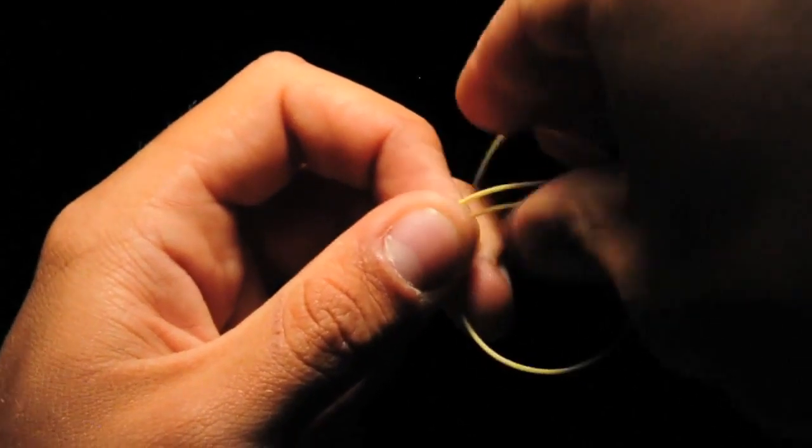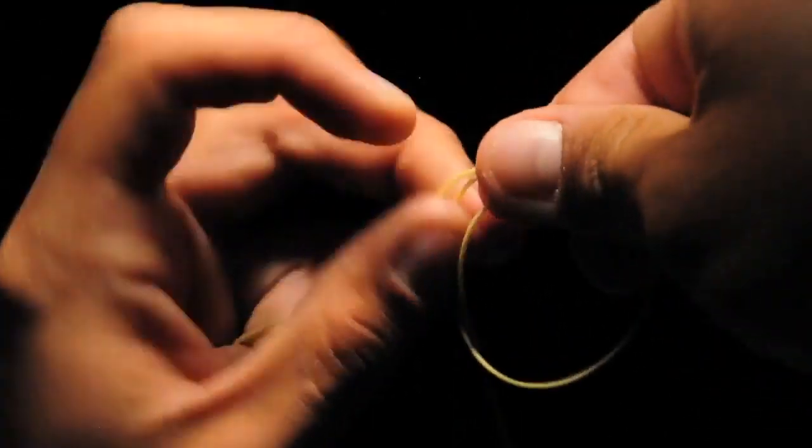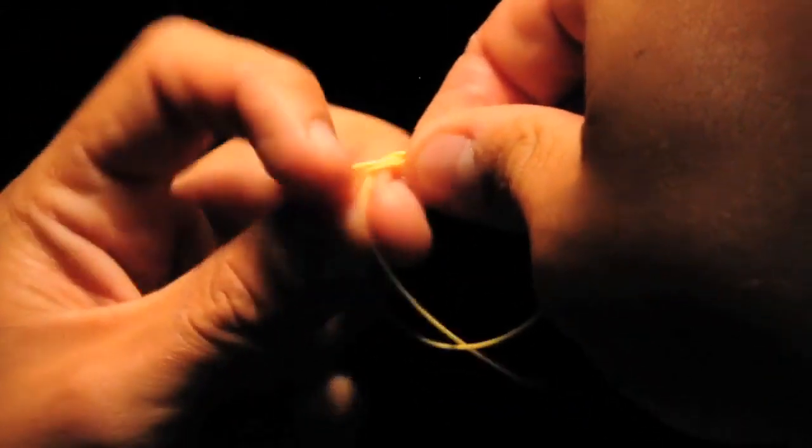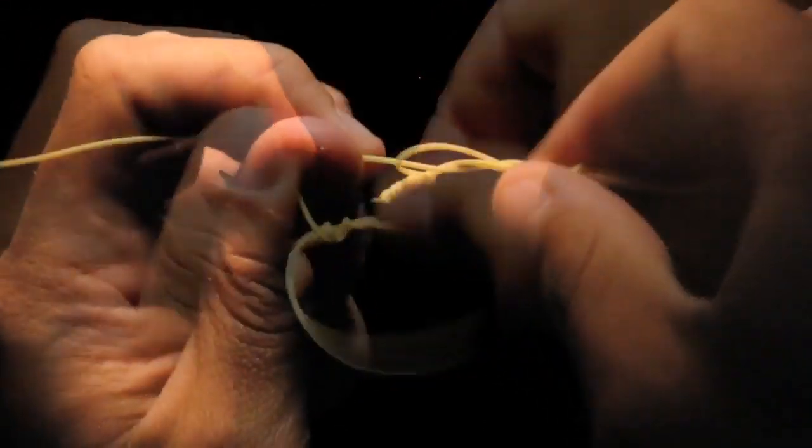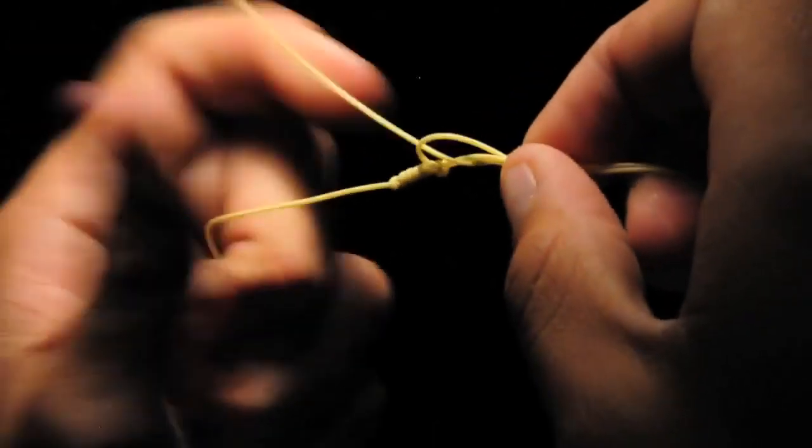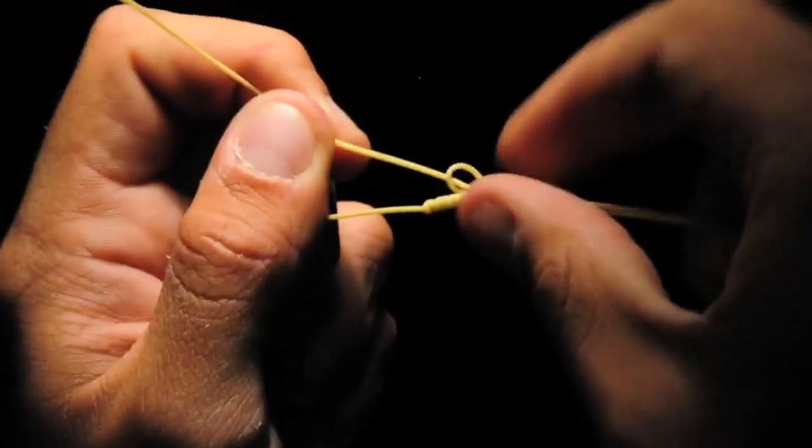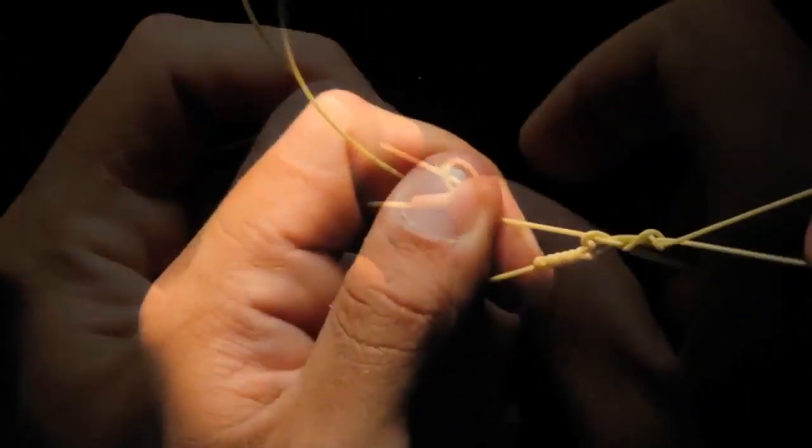To finish the bimini, take the tag end and wrap three wraps around both legs of the bimini loop. You might have to tease these wraps down to fit snug up against the actual bimini twist.